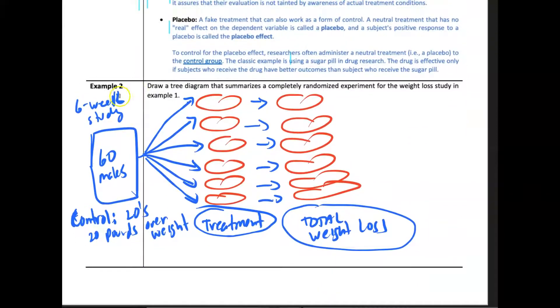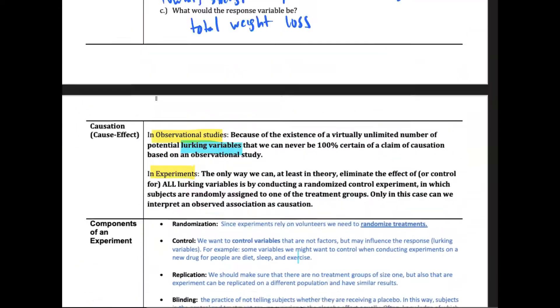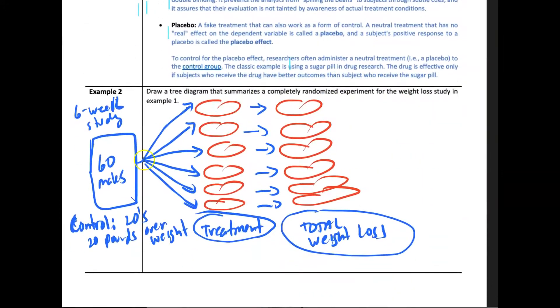To finish this, let's look at example two here. Draw a tree diagram that summarizes a weight loss study. Here's a sample we're going to use. Let's say we want to design a weight loss study, a six-week study, controlling for the amount of time, only people in their 20s and 20 pounds overweight. We gather 60 males.